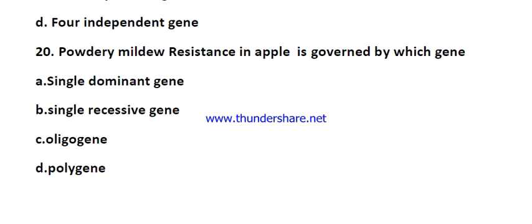Question number twenty: powdery mildew resistance in apple is governed by which gene? Options are single dominant gene, single recessive gene, oligogenes, and polygenes. The right answer is single dominant gene. This gene is the Pl2 gene, which is responsible for resistance to powdery mildew in apple.